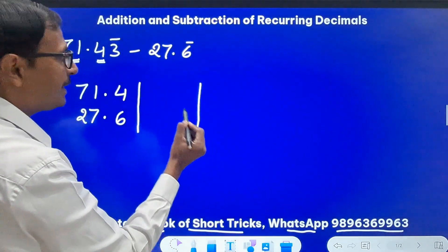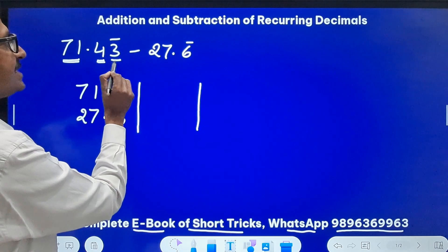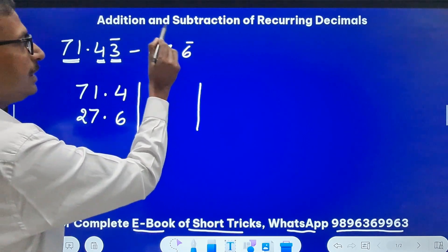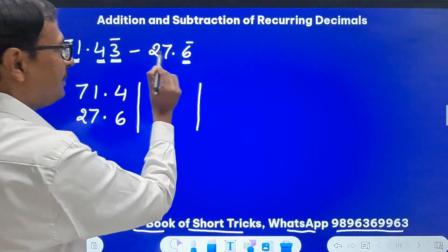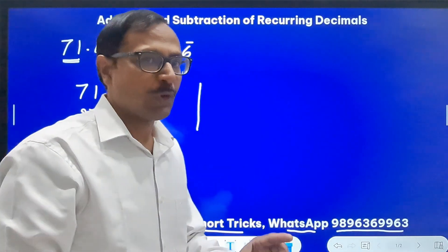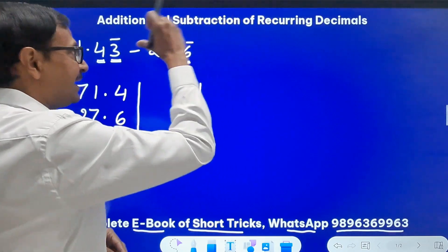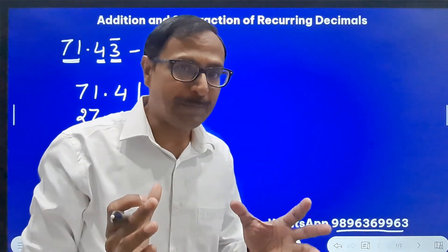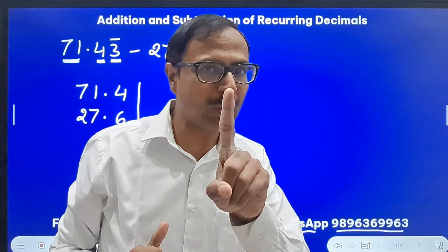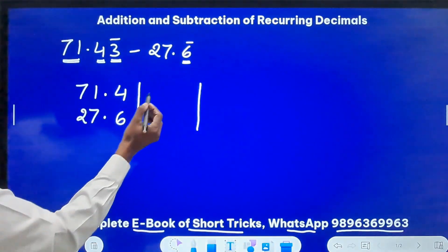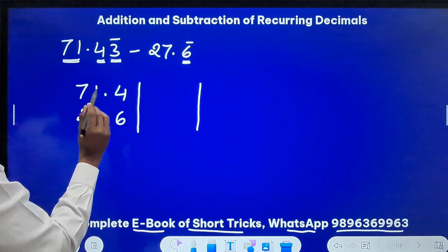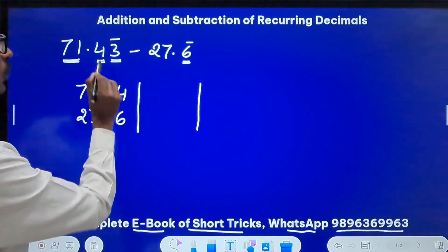Now the number of decimal places which are repeating here, you can see one digit is repeating. Here also you can see one digit is repeating. The LCM of one and one, the number of repeating digits, the LCM is one only, so I will write one digit in the middle here. So 71.43 and then 27.6.